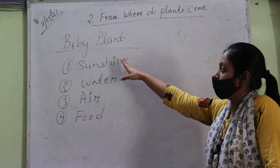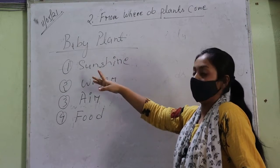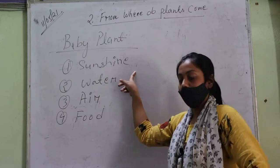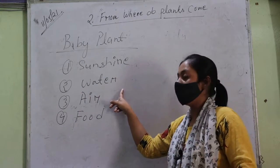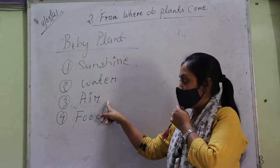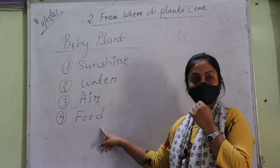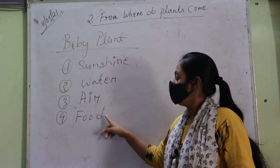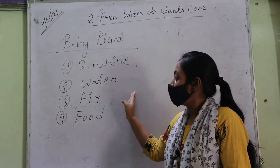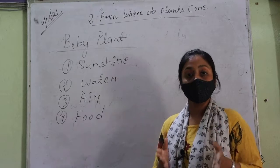Seed ko baby plant to grow karne ke liye kya kya chahiye: number one sunshine - dhoop chahiye, number two water - paani chahiye, number three air - hawa chahiye, number four food - food chahiye. Yeh charo baatein hain jo help karti hain seed ko baby plant grow karne ke liye.